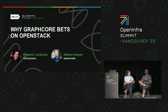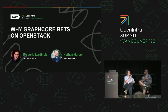Graphcore has developed our own silicon systems, software, and SDKs, all of which have been designed for AI machine learning from the ground up. Our systems are our IPU machines. One of our IPU machines looks like a server, but you can't use it like a server — you can't log on to it. It's effectively a network appliance containing four of our IPUs, and a user will access that over the network.